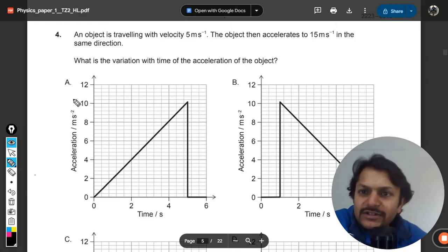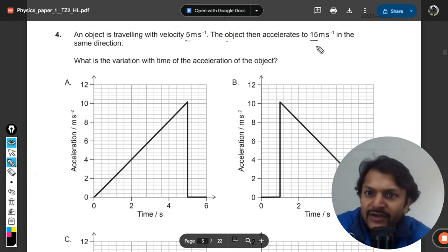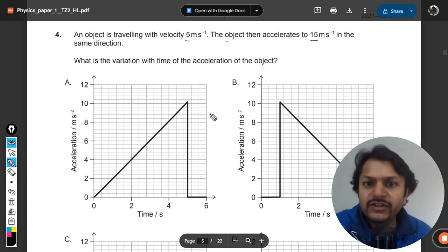Okay dear students, let's see what is there in this question. An object is traveling with velocity 5 m/s. The object then accelerates to 15 meters per second in the same direction. What is the variation with time of the acceleration of the object?